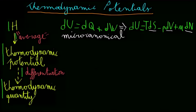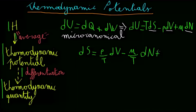To obtain an expression of S as a function of all the other quantities, we simply solve for it. In this case, we have to obtain dS equals p over T dV minus mu over T dN plus 1 over T dU.